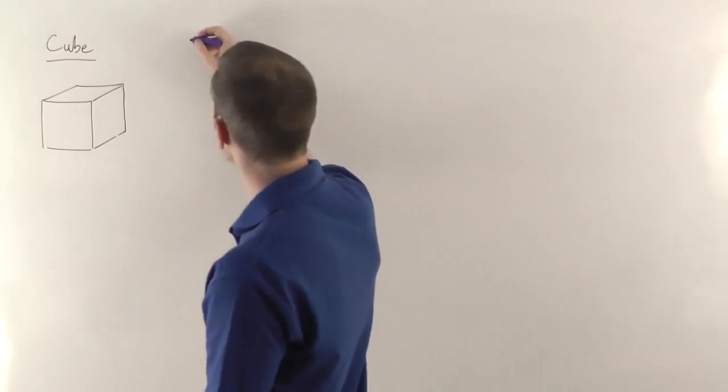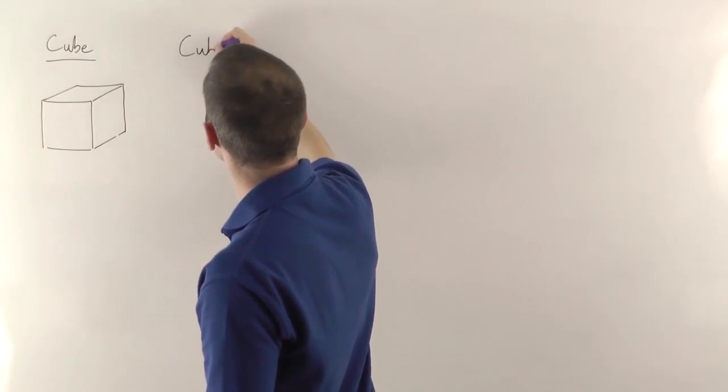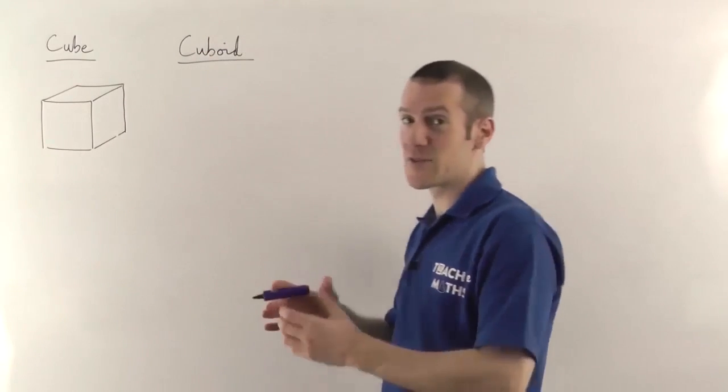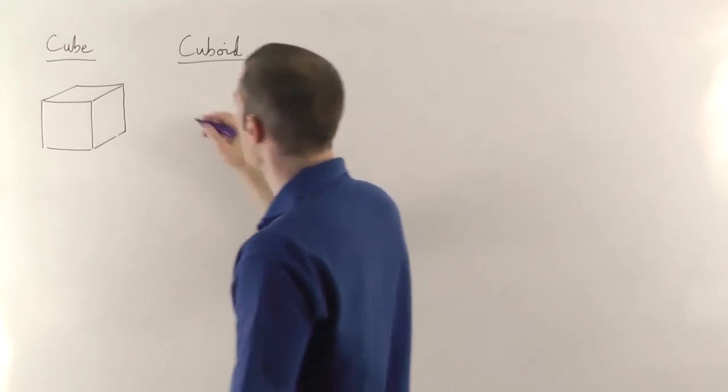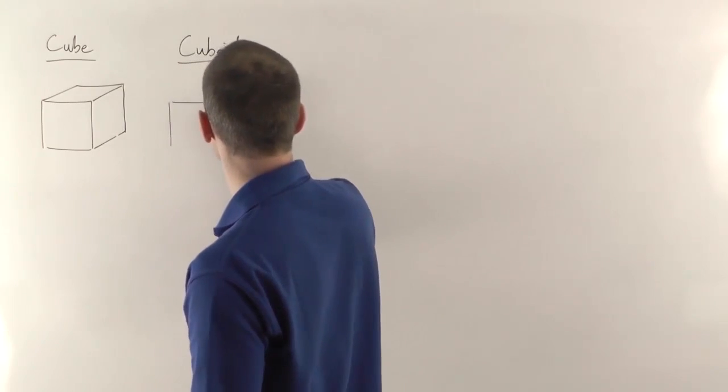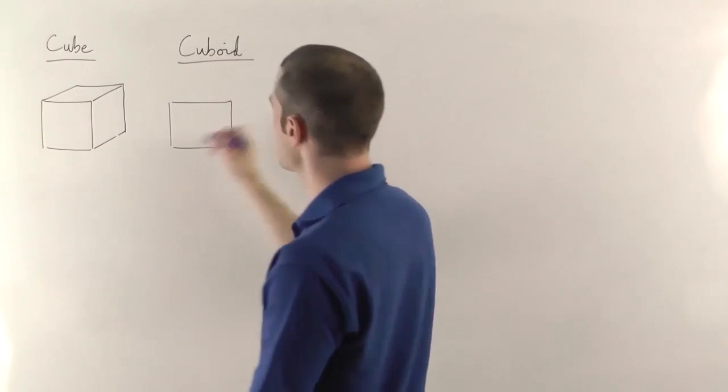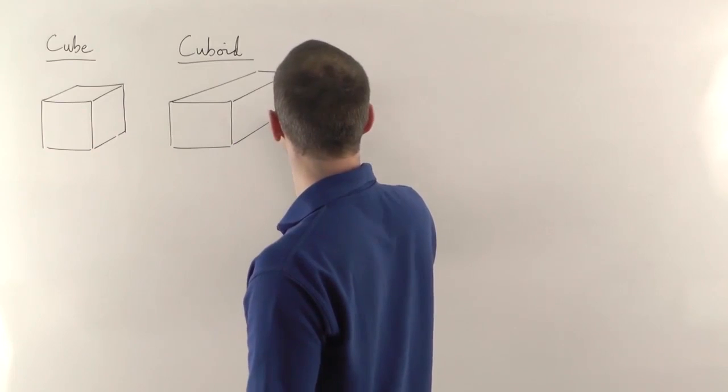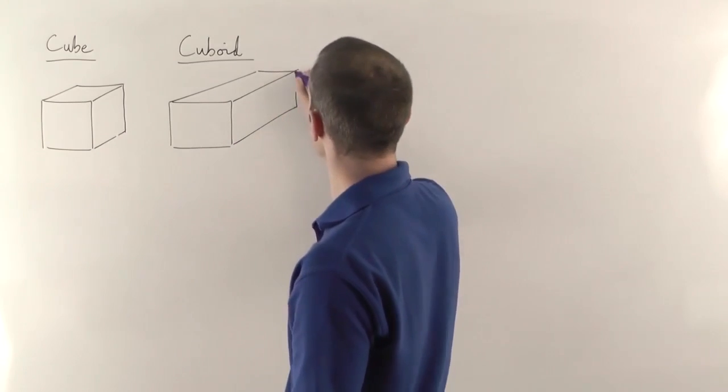Next one then will be a cuboid. A cuboid is a rectangle that's been stretched back into 3D. So if we draw a rectangle and again we can then extend that back into 3D. Something like that.